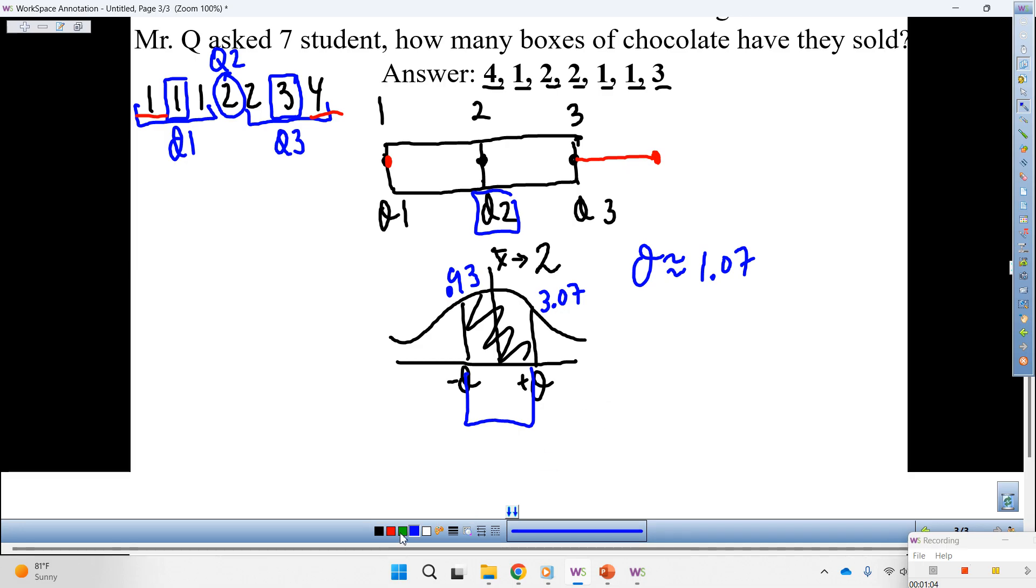So our norm is from .93 to 3.07. So now look at the context of this one. I asked seven students how many boxes of chocolate, this is what they told me. Now, according to these, and according to the norm, tell your neighbor what is your conclusion.